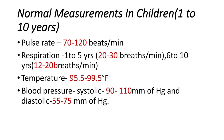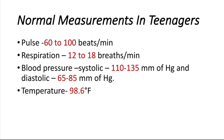Next, the normal measurements for teenagers, above 10 years of age: the pulse rate is 60 to 100 beats per minute. The respiration rate is between 12 to 18 breaths per minute.